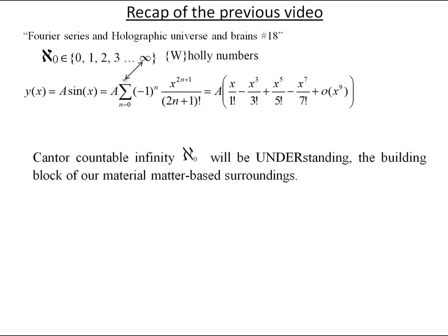Cantor countable infinity aleph index 0 will be understanding the building block of our material matter-based surroundings. After primordial monolith whole numbers go irrational transcendental numbers as waves x value inside sine, cosine, and exponential functions. That is where God inserts physics constants that can be irrational numbers, like math transcendental constant pi, but also complex numbers. And yes, complex numbers are real, not just mathematics novelty. Plus x value can be changed by humans.